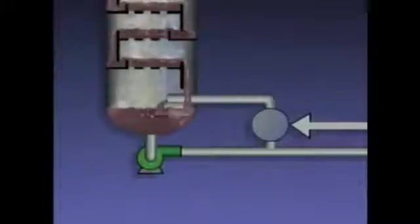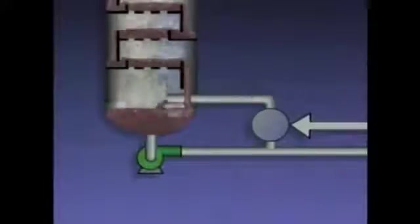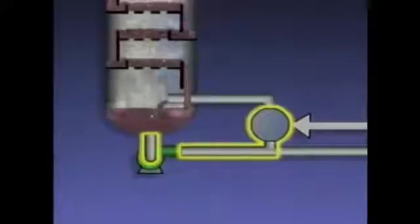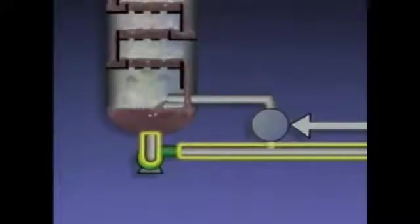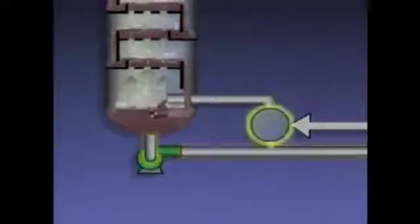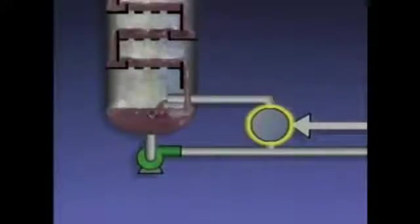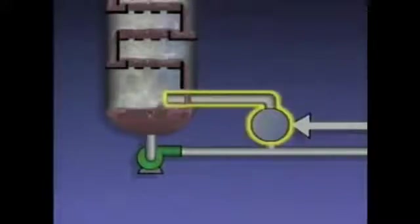Another method used to maximize product purity is called reboiling. The bottoms liquid that's drawn off from the tower is sent to a heater called a reboiler. The rest of the bottoms liquid is sent to storage or to other units in the plant as the tower's bottoms product. The reboiler heats the liquid it receives so that a mixture of vapors and liquid is formed. Depending on the system, either vapors or the mixture of vapors and liquid is then reintroduced into the tower.